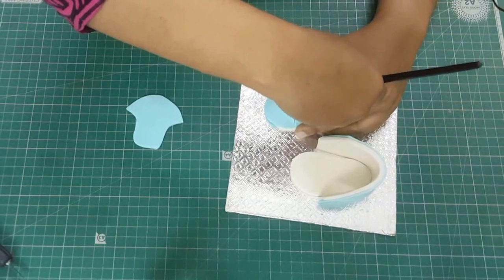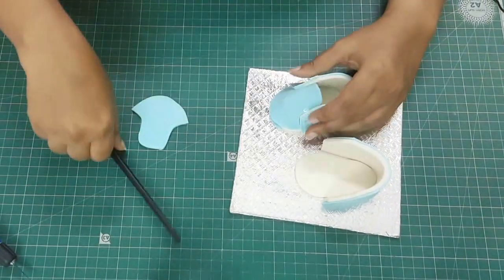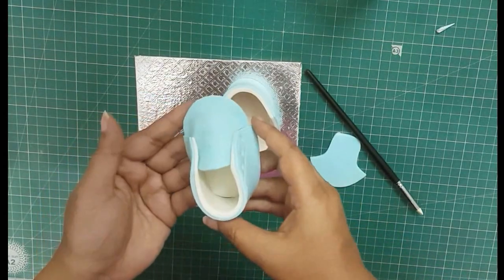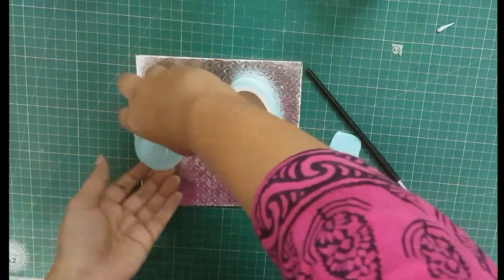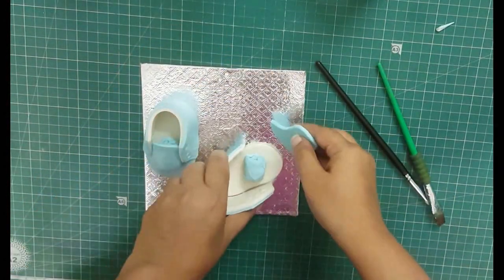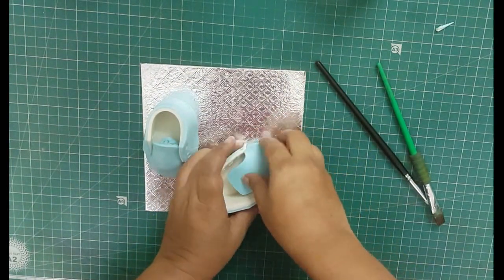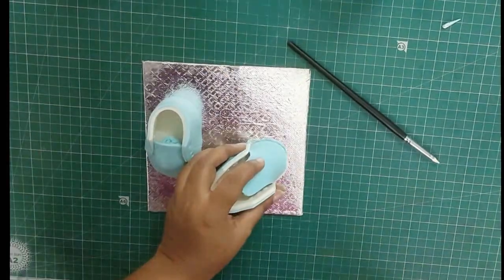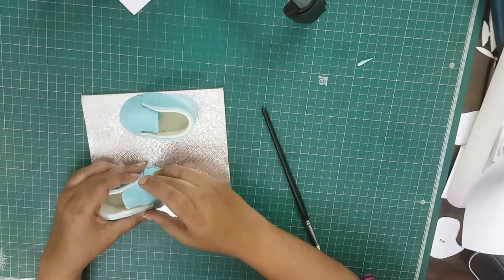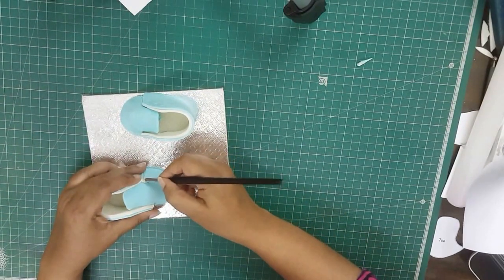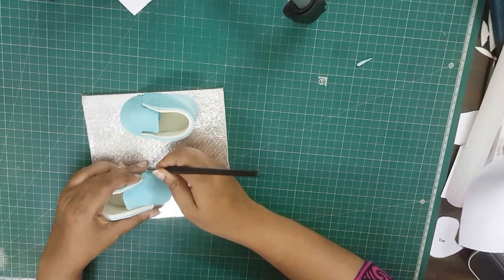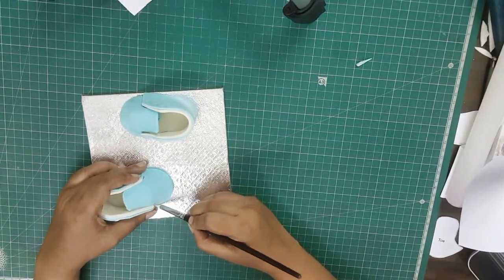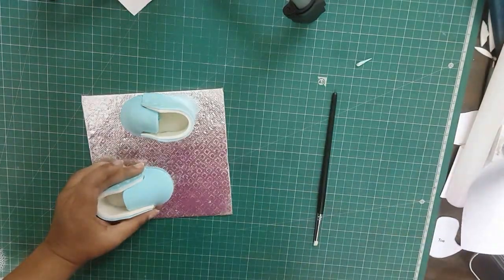Do not use water because we're using gum paste. Only use edible glue. The recipe for that I've given in the description box below. I find this rubber pen very handy to tuck in little nooks and corners. I'll leave a link in the description if you want to buy it.